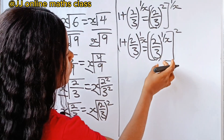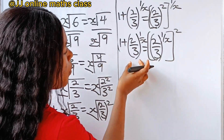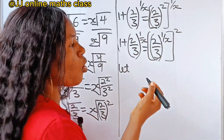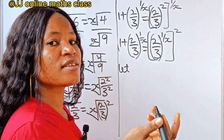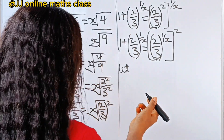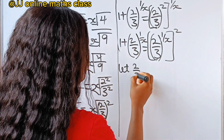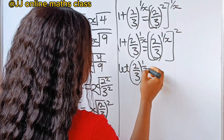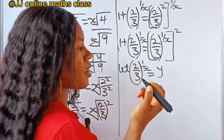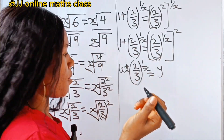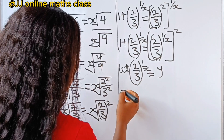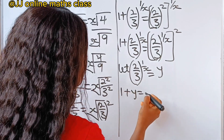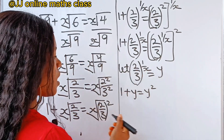Now we have the same expression on both sides, so let's call it a number to simplify the equation. Let 2 over 3 raised to the power of 1 over x be called y. Now, if we do that, we have 1 plus y is equal to y squared.